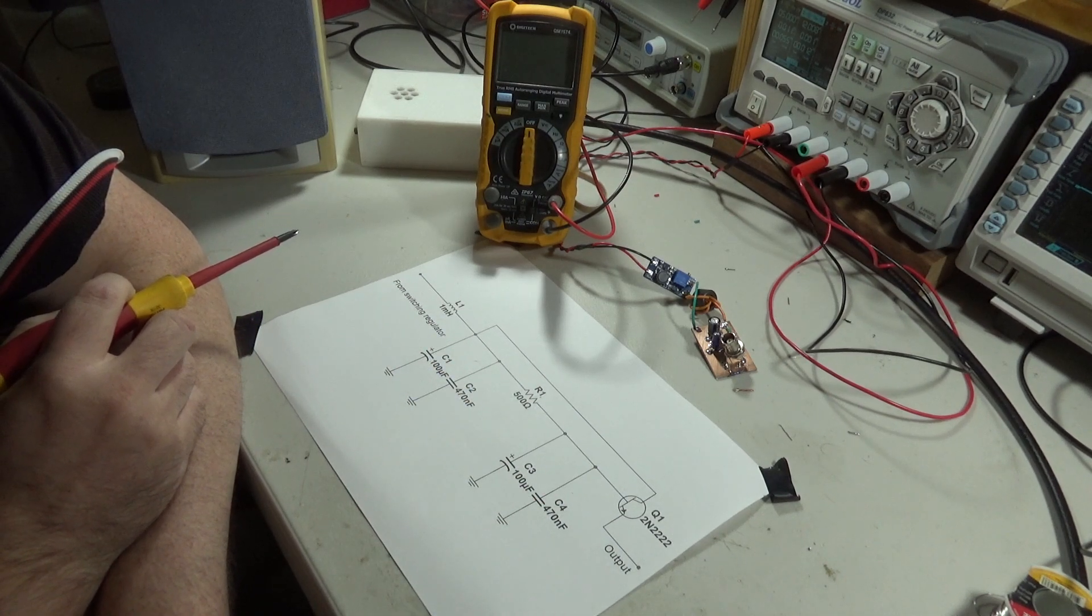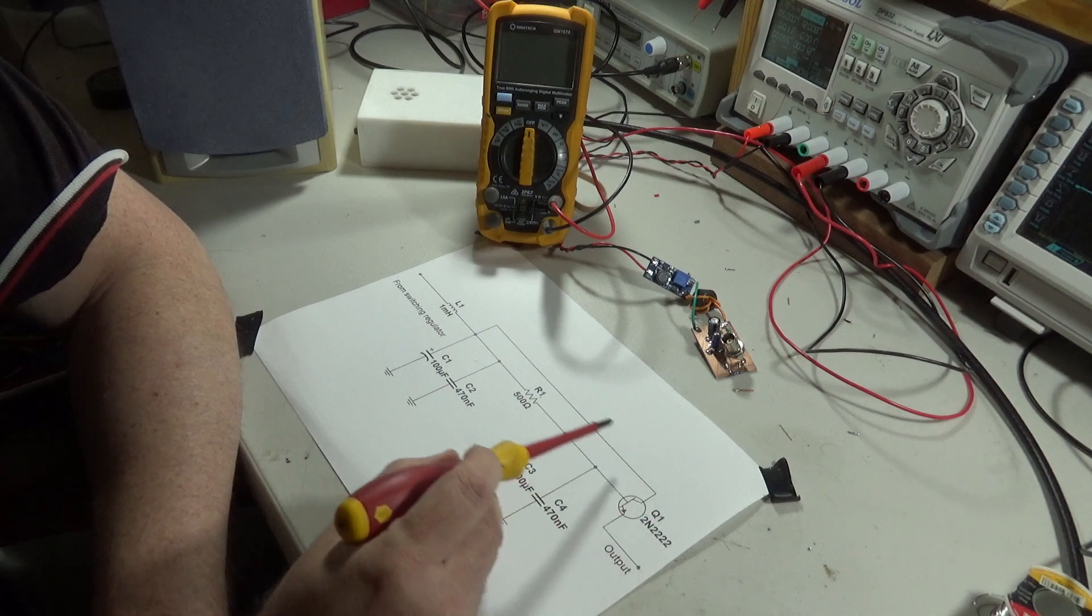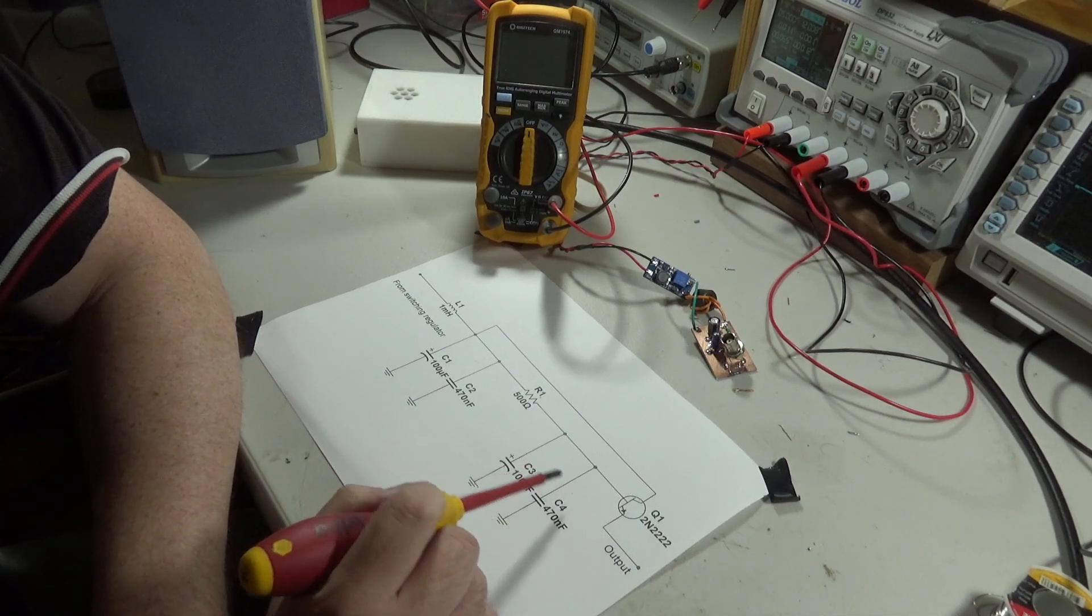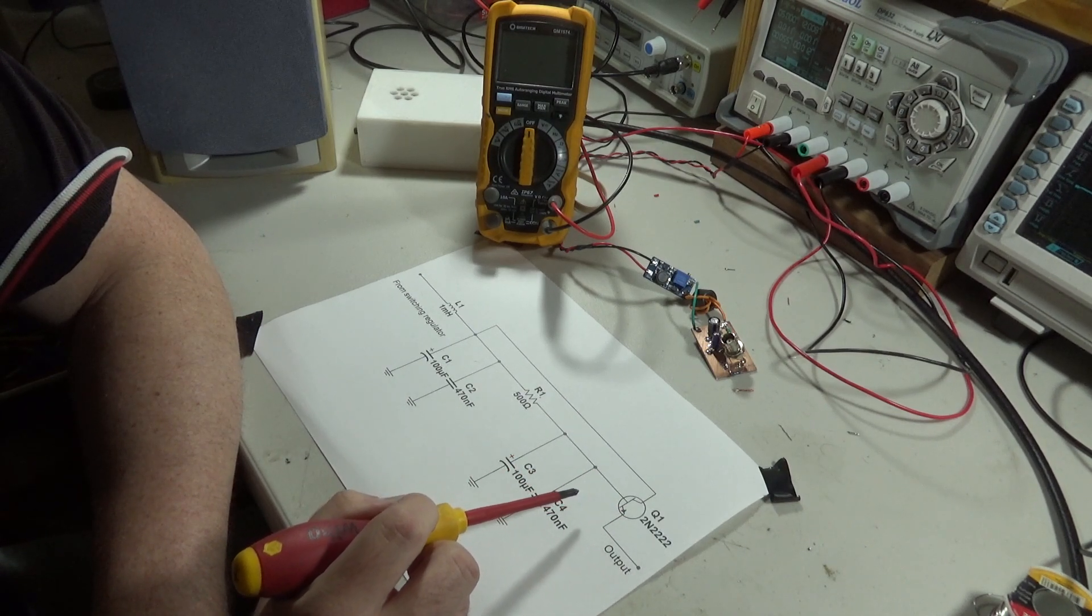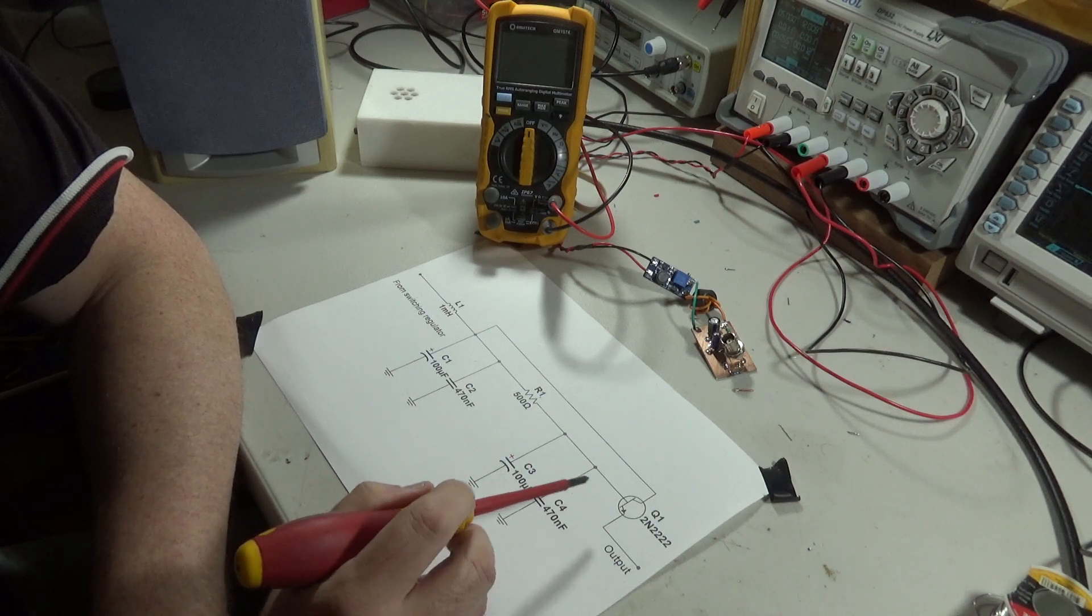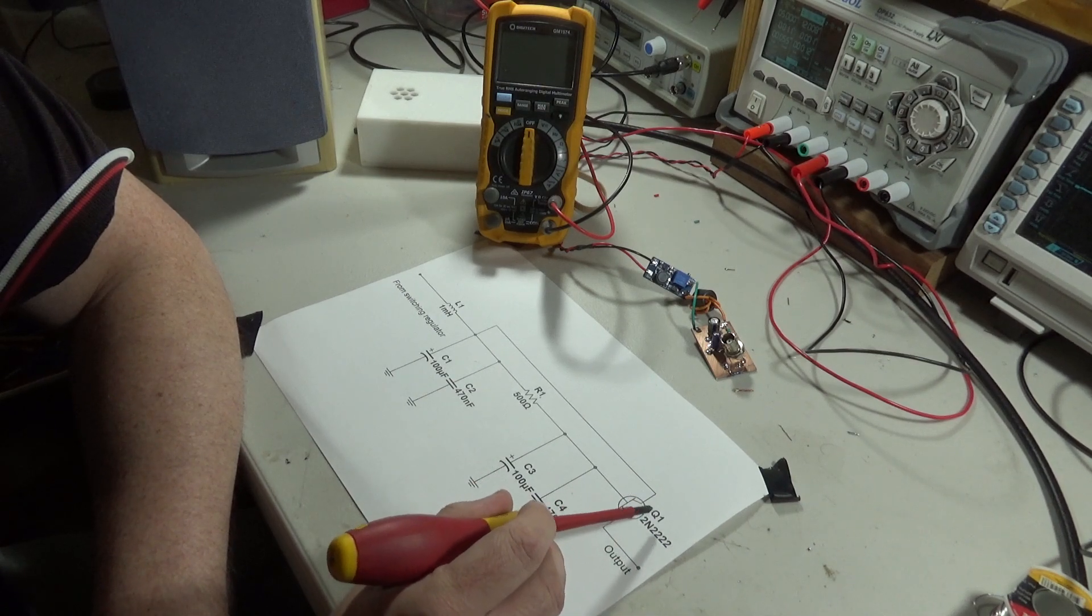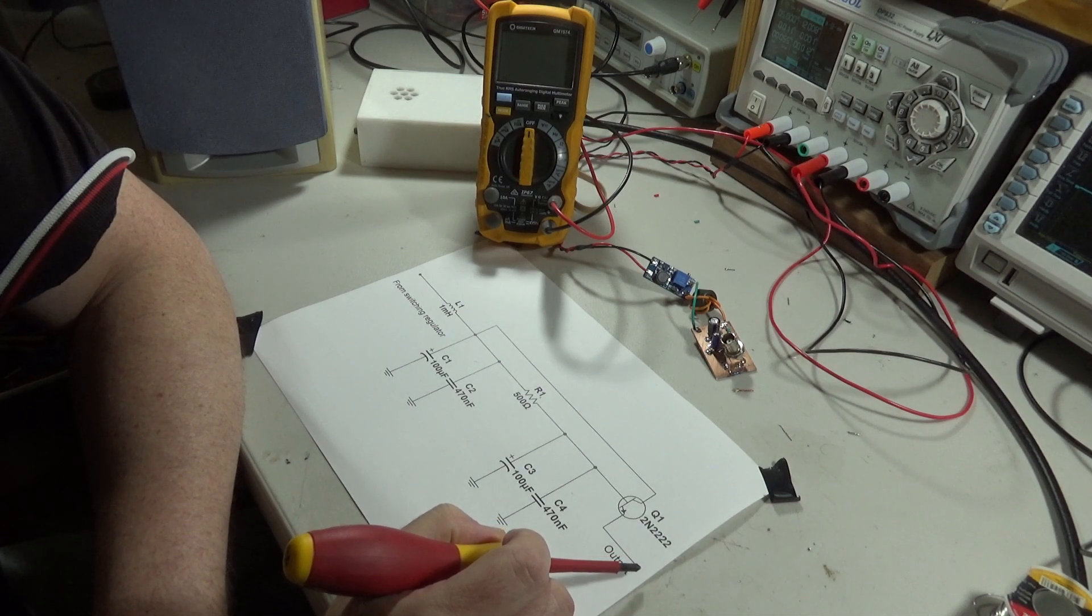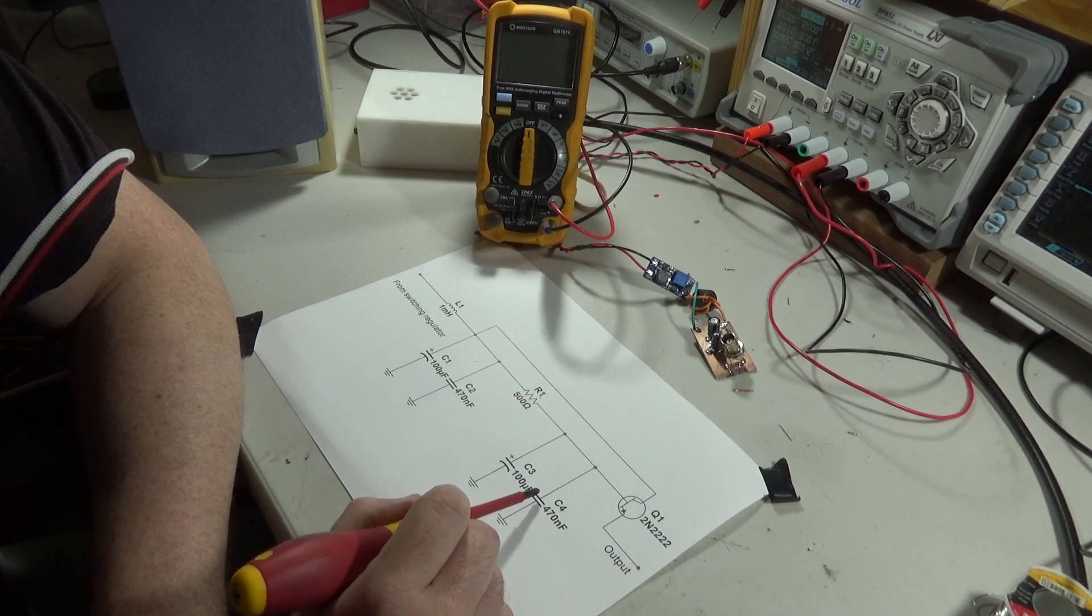And what this consists of is an LC low pass filter and then followed by a circuit known as a capacitive multiplier. And what a capacitive multiplier does is it's basically a voltage follower made from a transistor and the effect of it is that it multiplies the capacitance on the base by the transistor's beta. So here we've got about 100 microfarads and our 2N2222 has a gain of let's say 100. And so what we end up seeing on the output is it's like we've put an equivalent capacitance of 20,000 microfarads instead of 100.